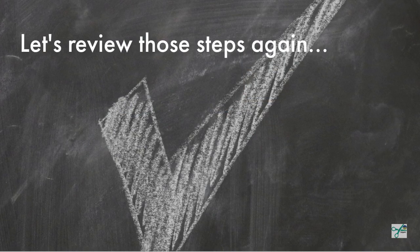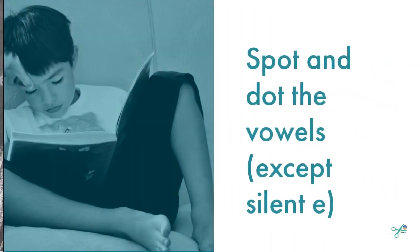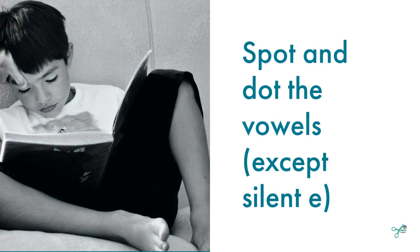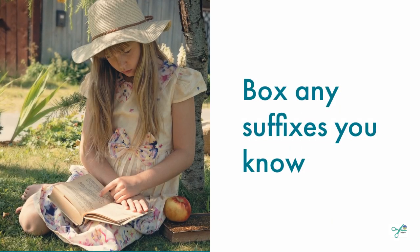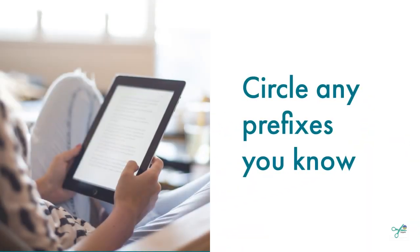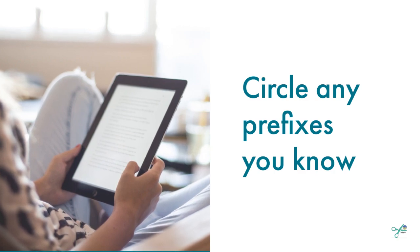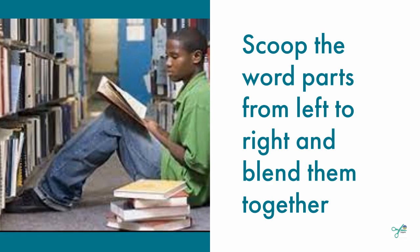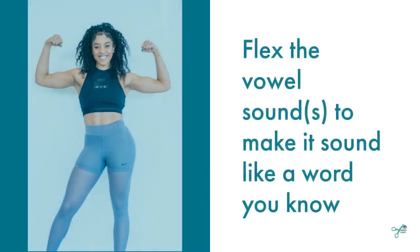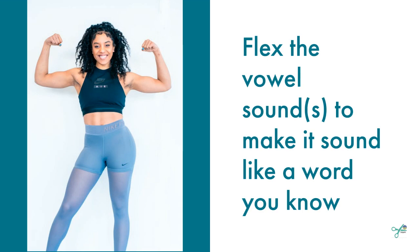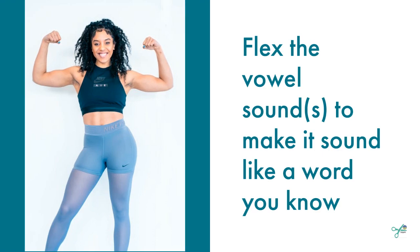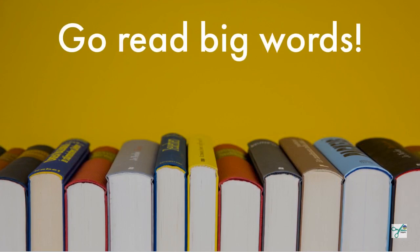Okay, that went pretty fast — let's go over those steps again. Step one: spot and dot the vowels, except the silent E. Step two: box any suffixes you know. Step three: circle any prefixes you know. Step five: scoop the word parts from left to right and blend them together to read the word. Step six: flex the vowel sound to make it a sound that makes sense in the word — like in 'unpredictable,' we flexed the long A to a schwa sound to make it a word we do know.